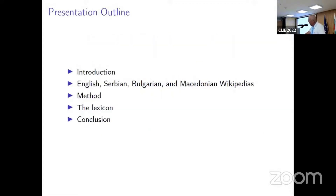This is the outline. First, as an introduction, I will give a simple definition of named entities, some examples, and say something about Wikipedia as a source for lexical resources. Then I will describe something specific about these four Wikipedia editions we are talking about, then the method for obtaining such a lexicon, then something about the lexicon itself, and finally the conclusion.